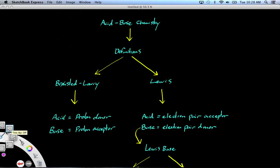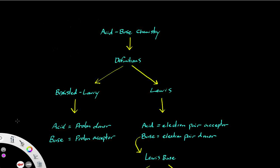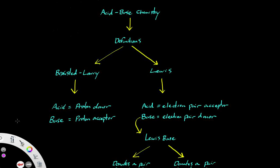In this video we will talk about the differences between a nucleophile and a base. To begin, we have to go back into acid-base chemistry definitions. Starting with the Lewis definition: an acid is an electron pair acceptor while a base is an electron pair donor. In the Brønsted-Lowry definition, an acid is a proton donor while a base is a proton acceptor.